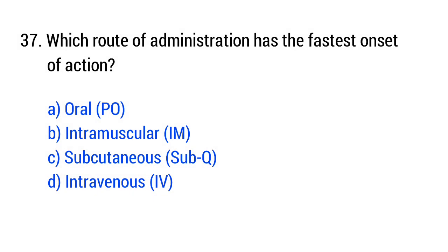Question 37. Which route of administration has the fastest onset of action? The right answer is option D: Intravenous (IV).